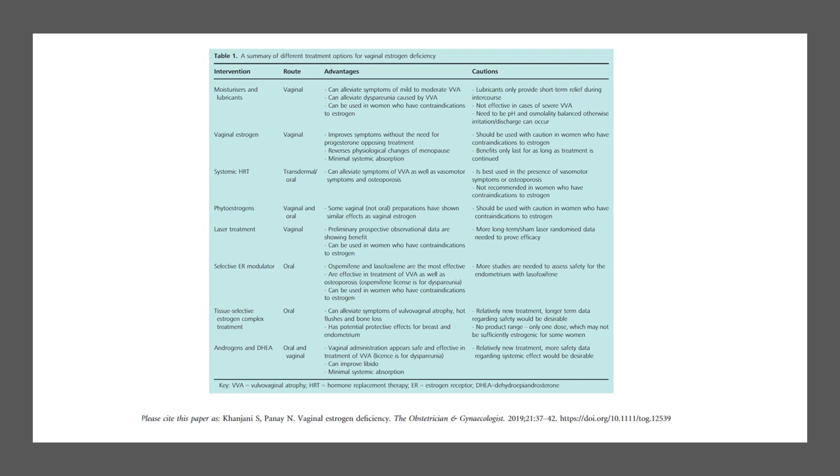Tissue selective oestrogen complex treatment can alleviate symptoms of vulvovaginal atrophy, hot flushes, and bone loss, has potential protective effects for breast and endometrium. A relatively new treatment, more safety data regarding safety would be desirable, no product range, only one dose which may not be sufficiently oestrogenic for some women. Androgens and dehydroepiandrosterone, so vaginal administration appears safe and effective in treatment of vulvovaginal atrophy, can improve libido, minimal systemic absorption, relatively new treatment, more safety data regarding systemic effects would be desirable.